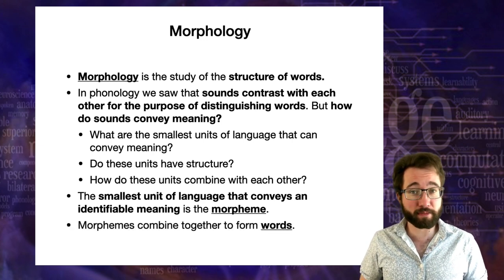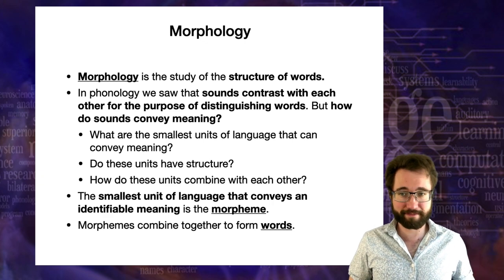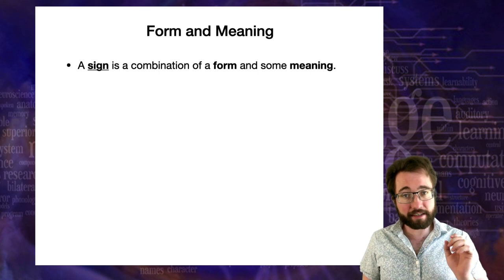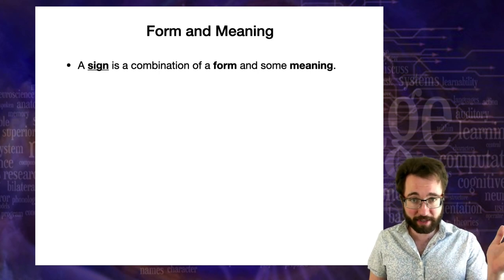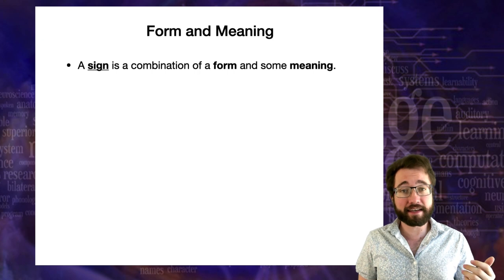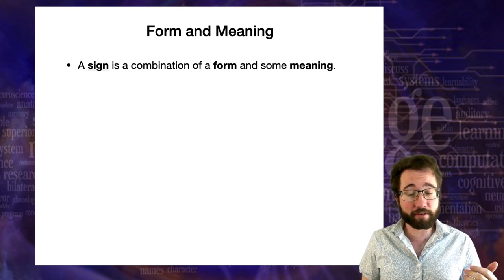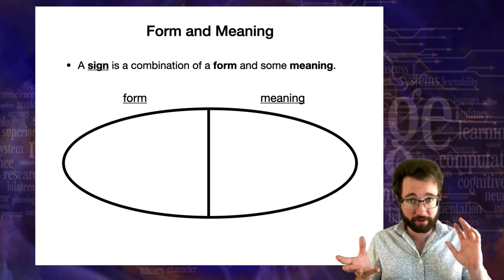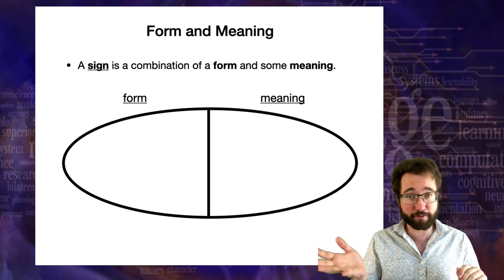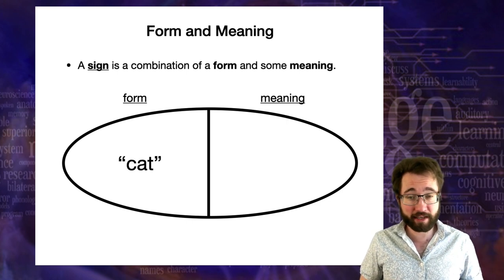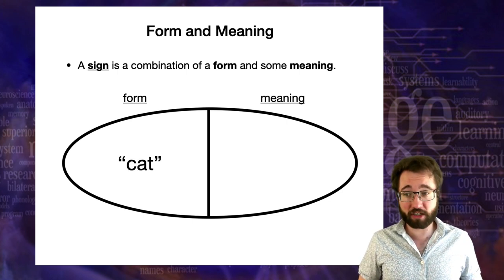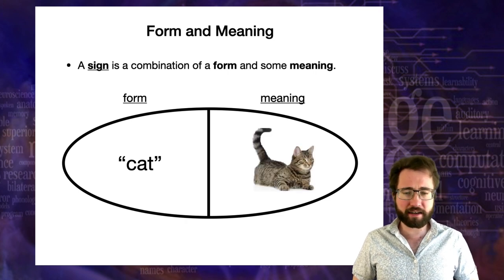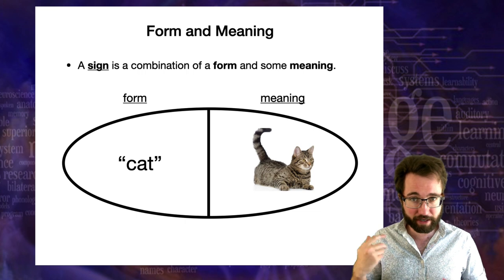Morphemes combine together to form words. Recall this idea of the sign, which we talked about in the second lecture. A sign is a combination of a form and a meaning — a pairing with a form on one side and a meaning on the other. The example we used was that the form 'cat' is associated in English with the meaning of a furry creature — a pairing of form and meaning.